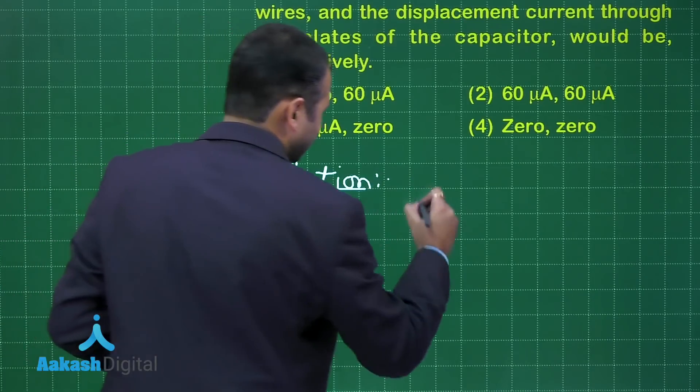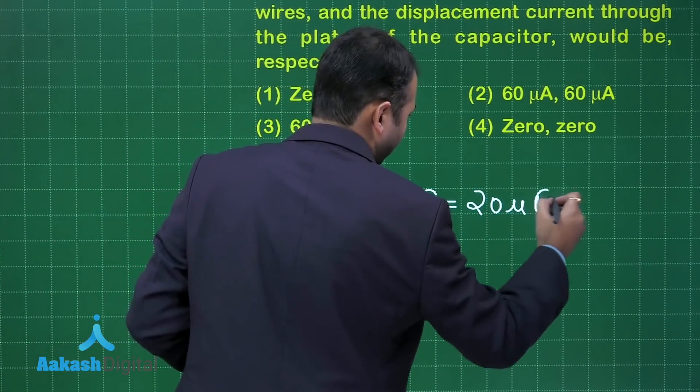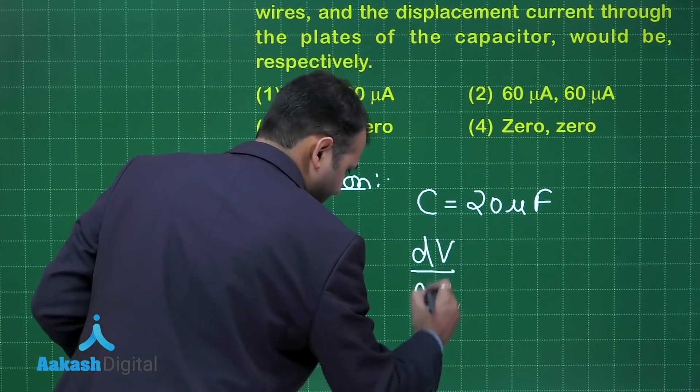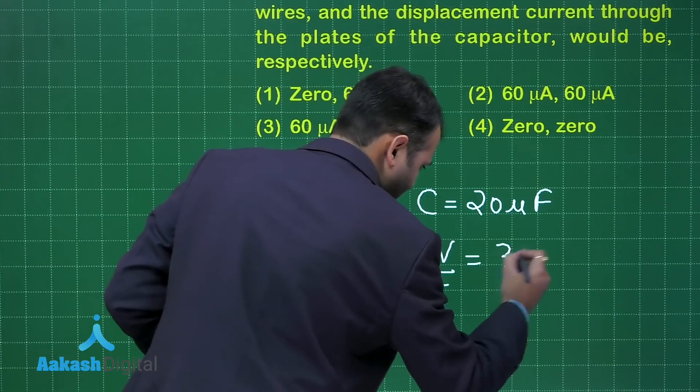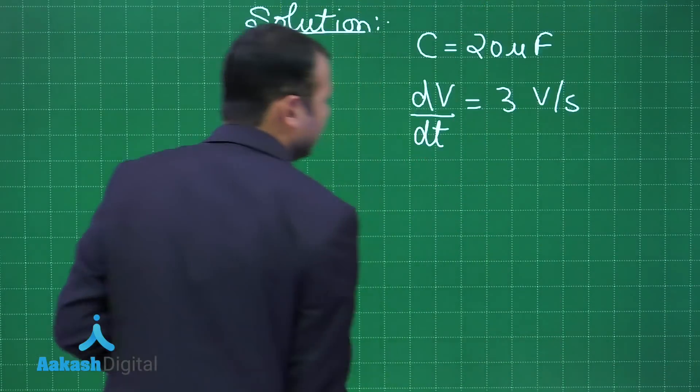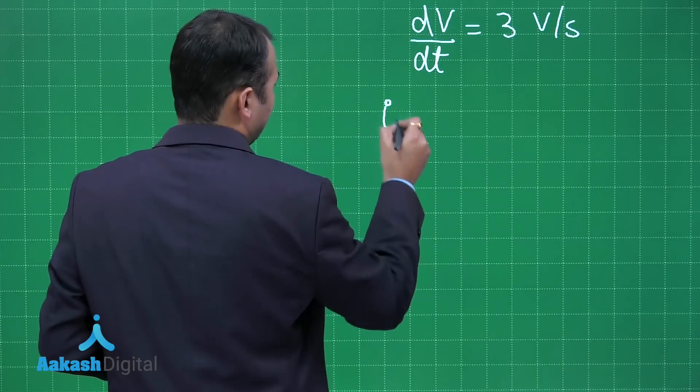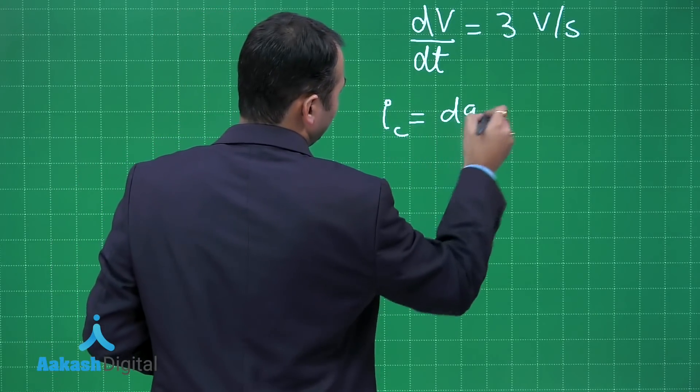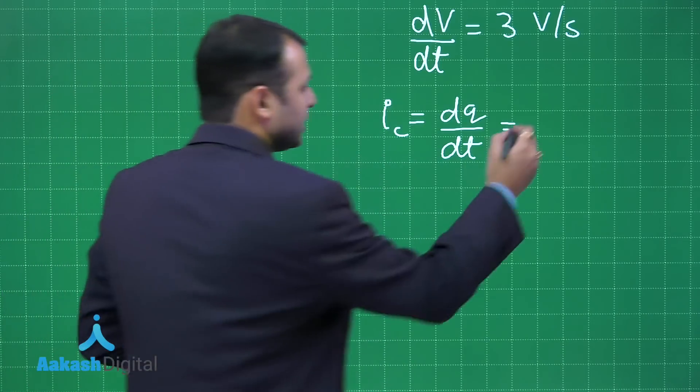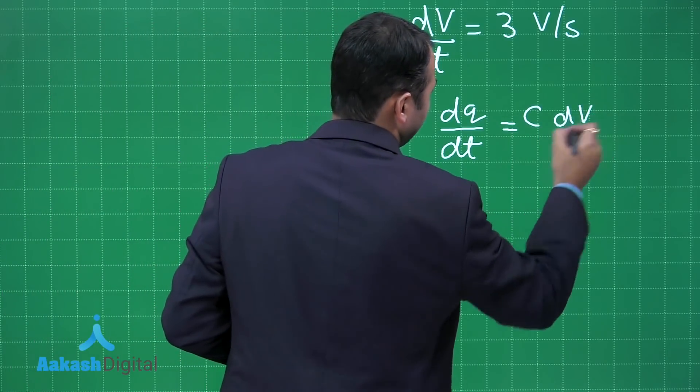First, capacitance is given as 20 microfarad. Then the voltage change rate is 3 volt per second. Now the conduction current here can be simply written as IC equals DQ by DT, and as you are aware that Q equals CV. In this case, C is constant, so we can write it as like this.